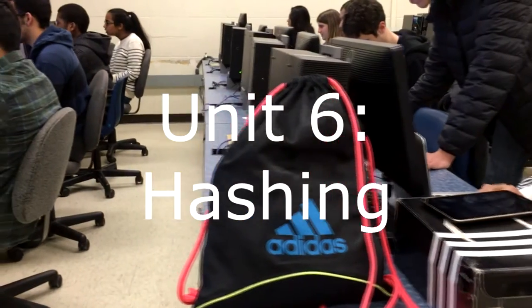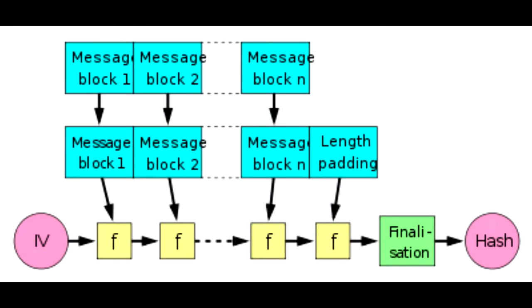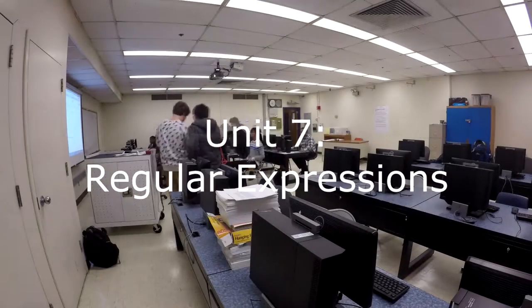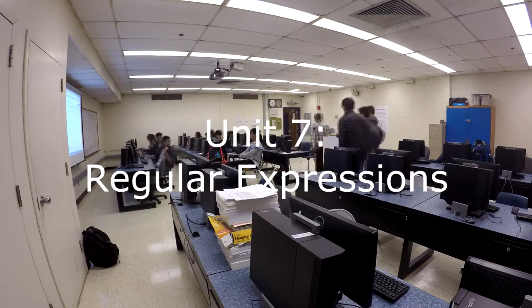Finally, Unit 6 teaches hashing, a process whereby information may be passed through a function and stored in an array, ArrayList, or LinkedList. This function may then be used to quickly retrieve the data, much more efficiently than using other sorting algorithms.